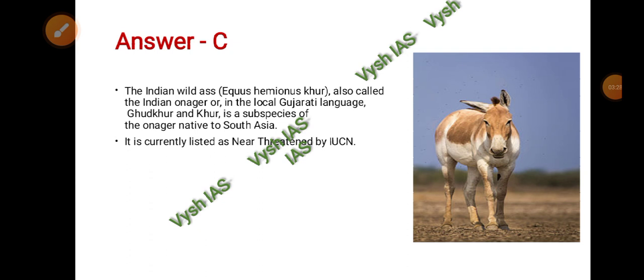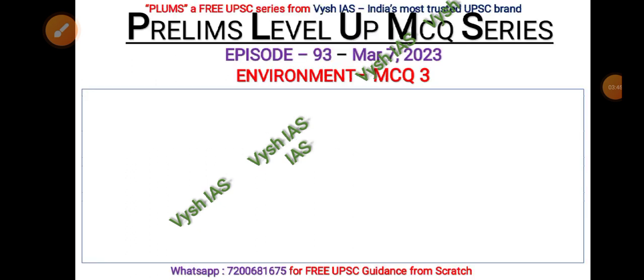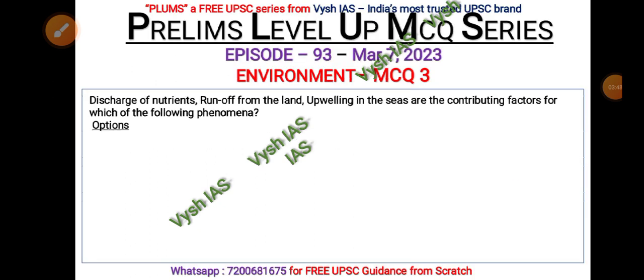The answer is C — Indian wild ass. It is also known as Equus hemionus khur, and another name is Indian onager. In the local Gujarati language it is called 'khur.' It is a subspecies of onager native to South Asia and is currently listed as near threatened by the IUCN.